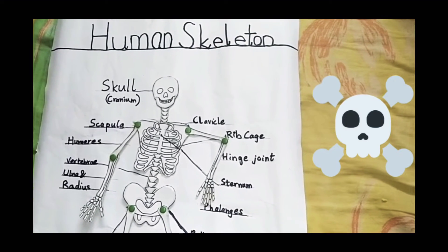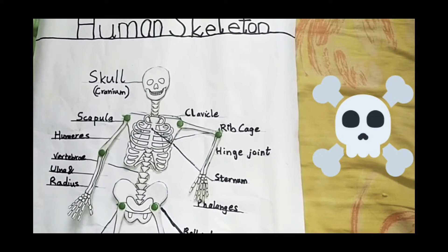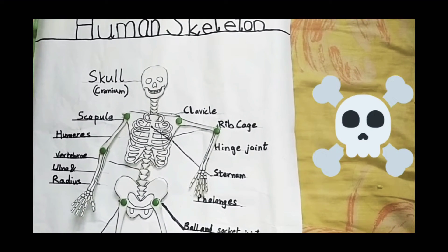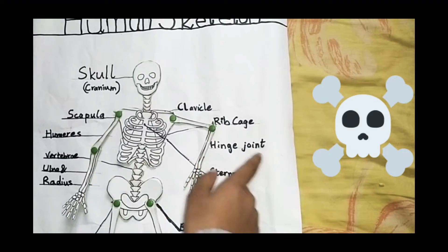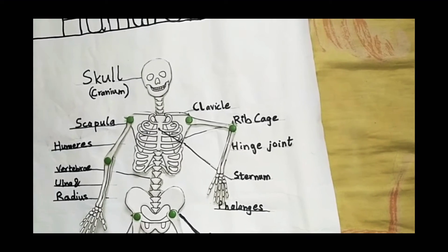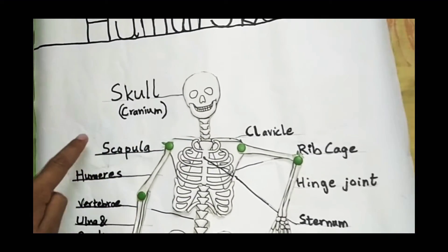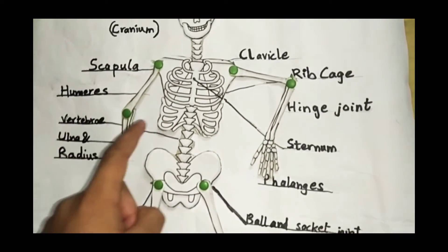I have now made the skeleton and pasted it on the chart paper. I have also labeled all the bones with their scientific names. Like here's the skull, cranium, scapula, clavicle, rib cage, vertebra, hinge joint.